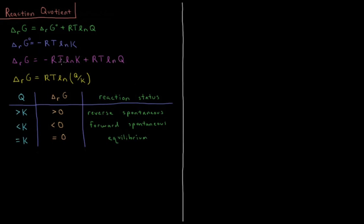Now, minus RT·ln(K) is equal to plus RT·ln(1/K), because minus the log of x equals the log of 1 over x. And if we have a·ln(x) plus a·ln(y), that equals a·ln(x times y). So combining these two terms, we have that the Gibbs energy of reaction equals the gas constant times temperature times the natural log of the reaction quotient divided by the equilibrium constant.